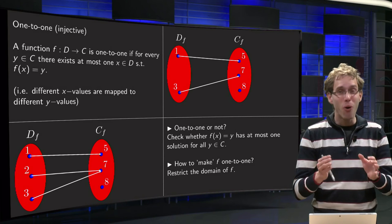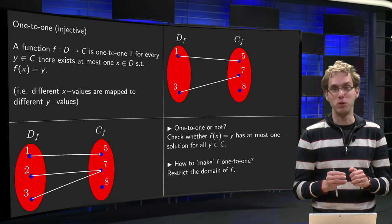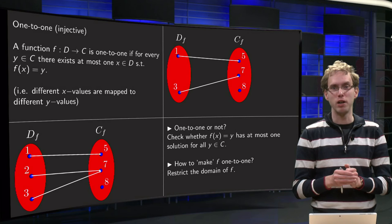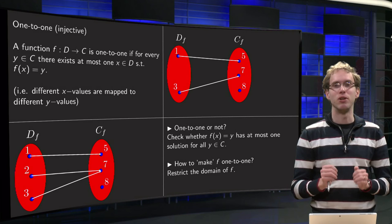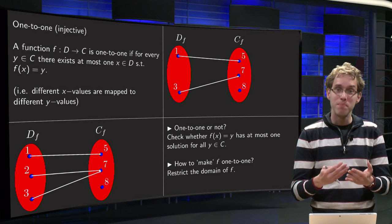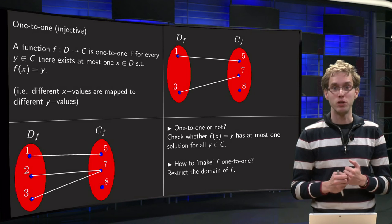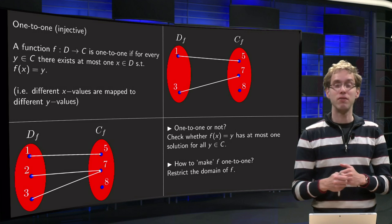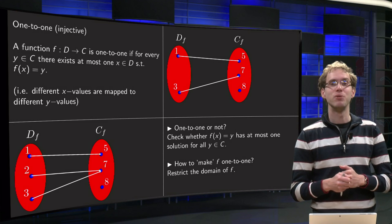And second lesson, you can always make your function one-to-one, because not being one-to-one is in fact the property of the domain being too large. So if you restrict your domain a bit, you can always make your functions one-to-one. So, now you know how to check whether a function is one-to-one, and you know, if it's not, how to make it one-to-one.